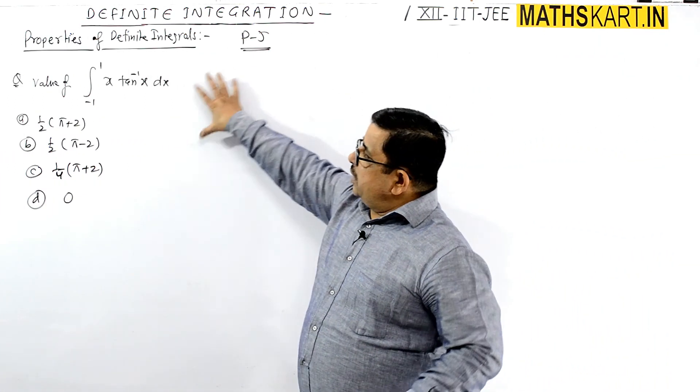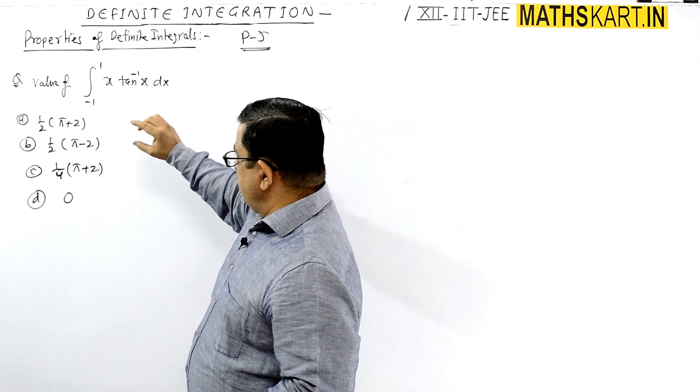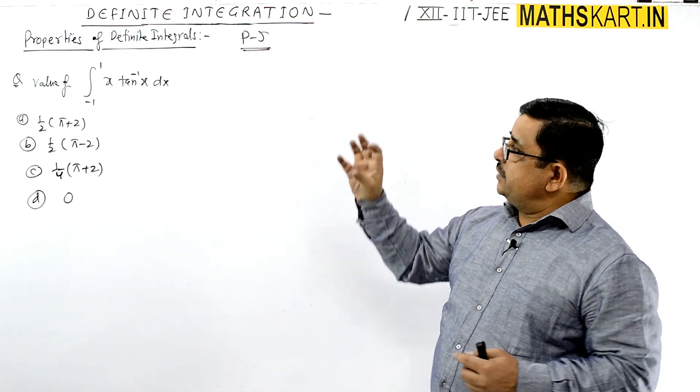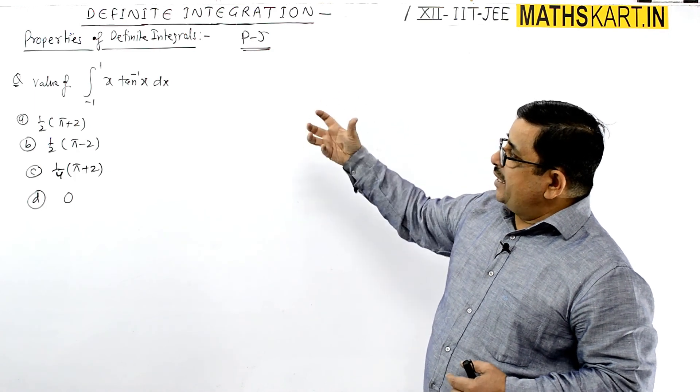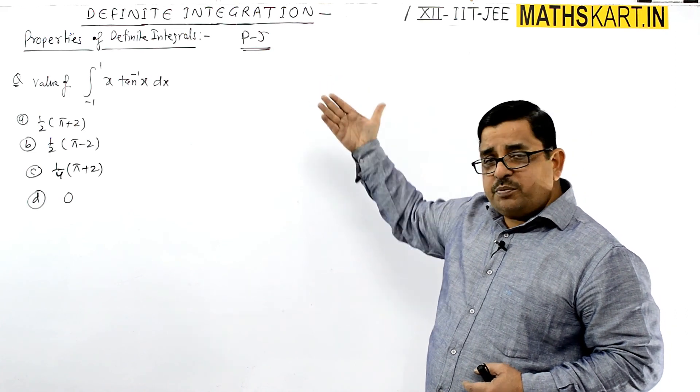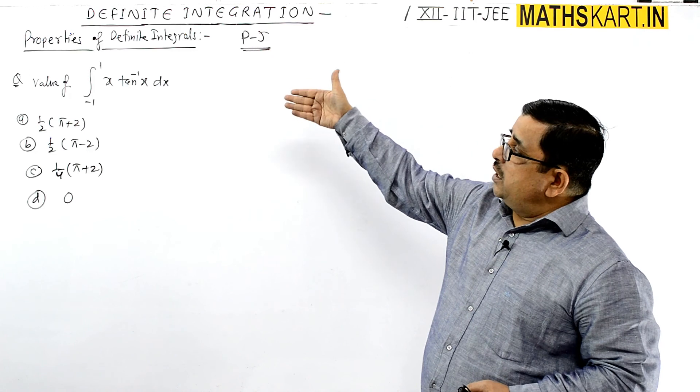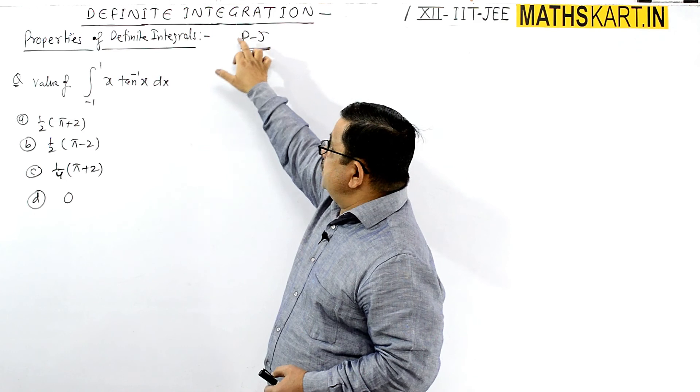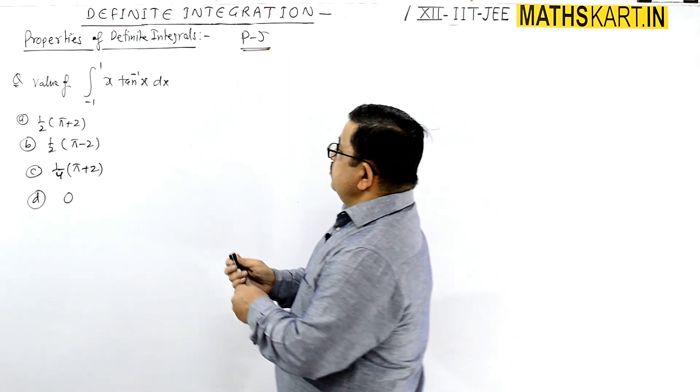Using property 5 for the next question from -1 to 1 of x tan inverse x. You have to find out the value of the definite integral from -a to a. You can use property 5 to solve this question correctly, but first you have to check whether property 5 can be used or not.